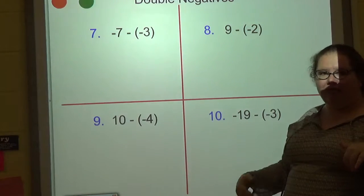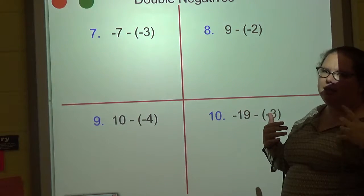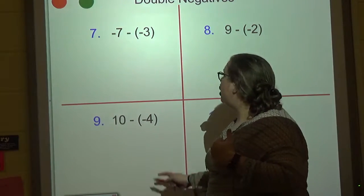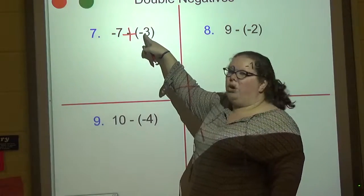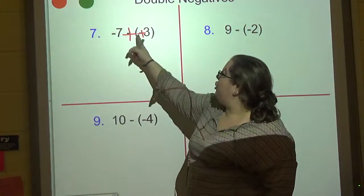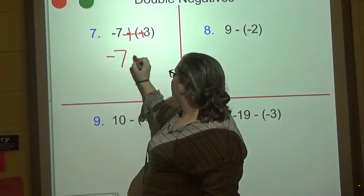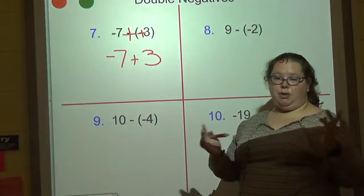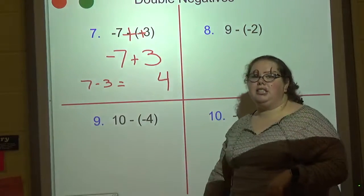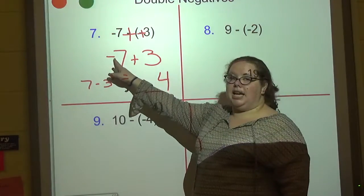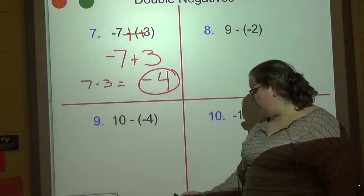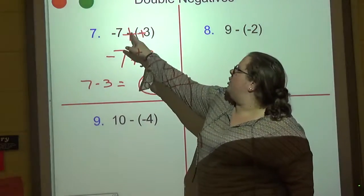Now a double negative. The process is the same — when I see a subtraction with signed numbers I change it to plus. But if the number is already negative, the opposite of negative is positive, so it actually just becomes plus plus. We have negative seven plus three. Opposite signs — subtract: seven minus three is four. Is the final answer positive or negative? The bigger sign is negative, so the answer is negative four.